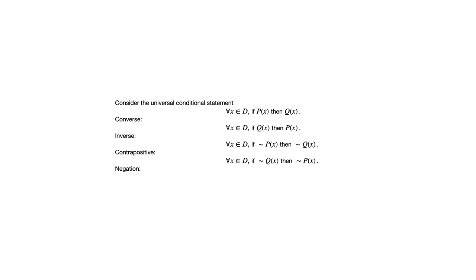Let's also talk about the negation. You may remember from chapter 2 that the negation of a conditional statement can be tricky — your first instinct might be that the negation is also a conditional statement, but that's not the case. The negation switches from universal to existential, and when we negate the conditional part, it becomes a conjunction. So we get: there exists x in d such that p of x and not q of x.